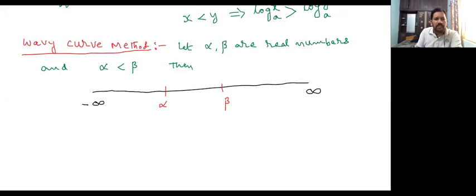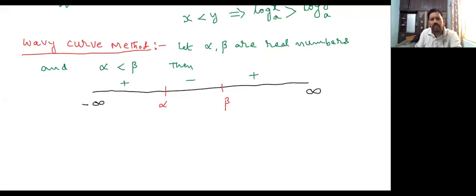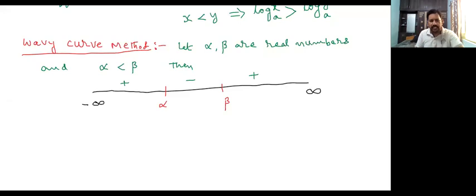Now, by using the wavy curve method, how to write the interval. Whenever you are starting the wavy curve method, start from the right-hand side onwards. This part is positive, middle part is negative, this is positive. Starts with positive, then write alternative signs: positive, negative, positive, negative like that.